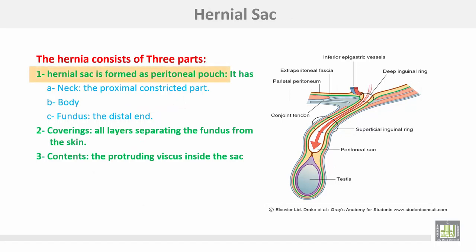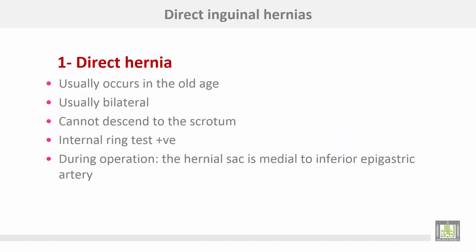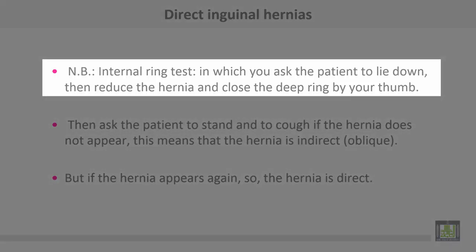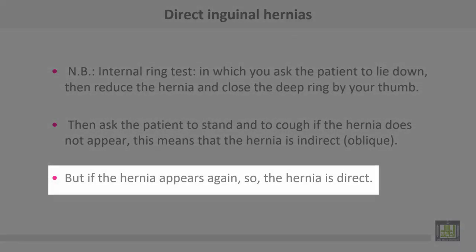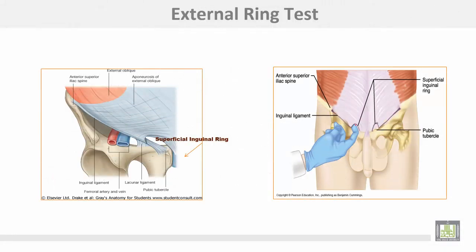The hernial sac consists of three parts: the neck, which is the proximal constricted part; the body; and the fundus, which is the distal end. Coverings are all layers separating the fundus from the skin, and the contents are the protruding viscus inside the sac. Direct hernia usually occurs in old age, is usually bilateral, and cannot descend to the scrotum. The internal ring test is positive. During operation, the hernia sac is medial to the inferior epigastric artery. For the internal ring test, ask the patient to lie down, reduce the hernia, and close the deep ring with your thumb. Then ask the patient to stand and cough. If the hernia doesn't appear, this means the hernia is indirect or oblique. But if the hernia appears again, the hernia is direct.